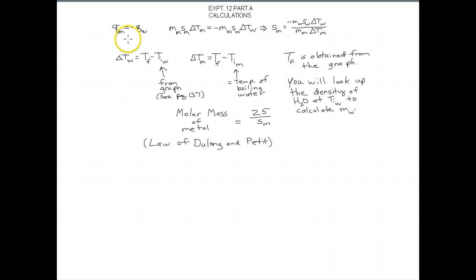So the idea here is that q of the metal is equal to minus q of the water. And we know that q is mass times specific heat times delta T. So mass of the metal, specific heat of the metal, delta T of the metal is equal to negative, remember that sign, mass of the water, specific heat of the water, and delta T of the water.